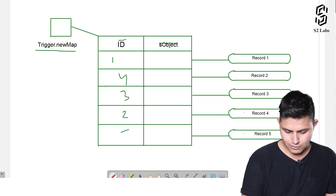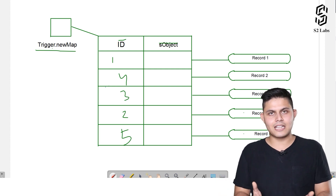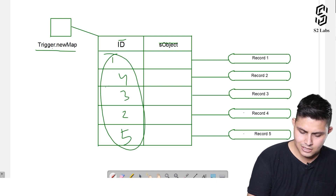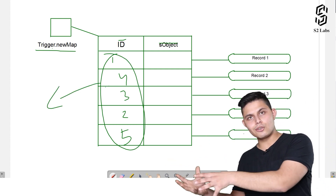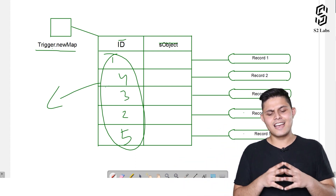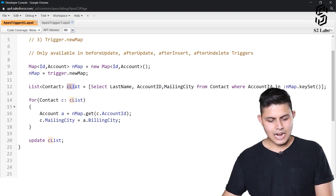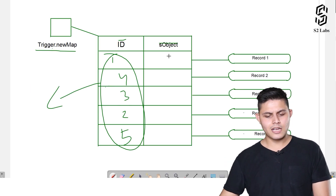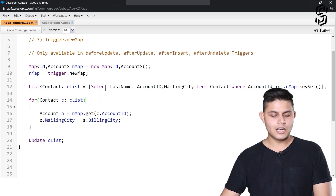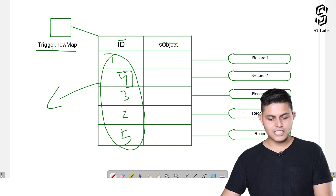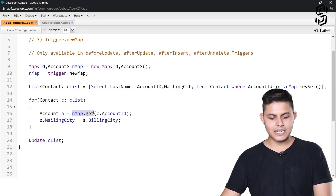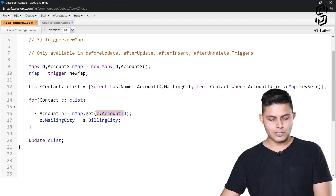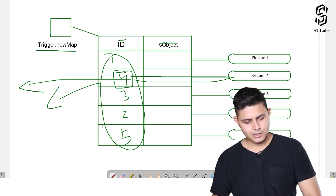For example, if the map has IDs like ID1, ID2, ID3 mapped to their respective SObjects, and David belongs to account Yeti Coolers with record ID 4, then nmap.get(4) will go to that entry, fetch the account record associated with ID 4, and return it into the account variable 'a'.